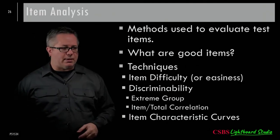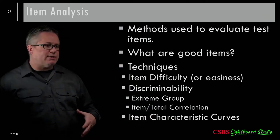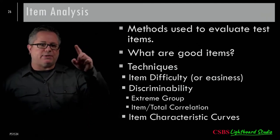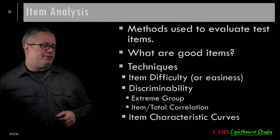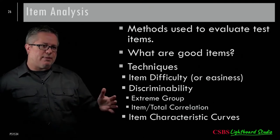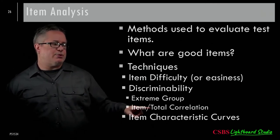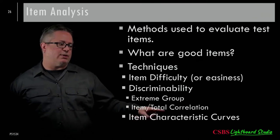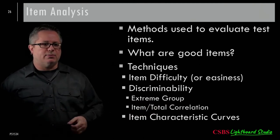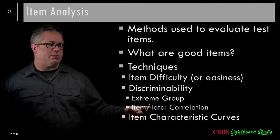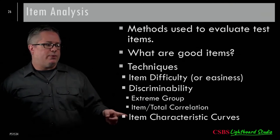The item-total correlation method is like a proxy for factor analysis. In factor analysis, a factor drives all items — it's a sophisticated composite of the items combined with different weights. If we substitute the total composite score for the factor and look at how much each item correlates with the total, we get an idea of how much each item relates to what we're trying to measure.